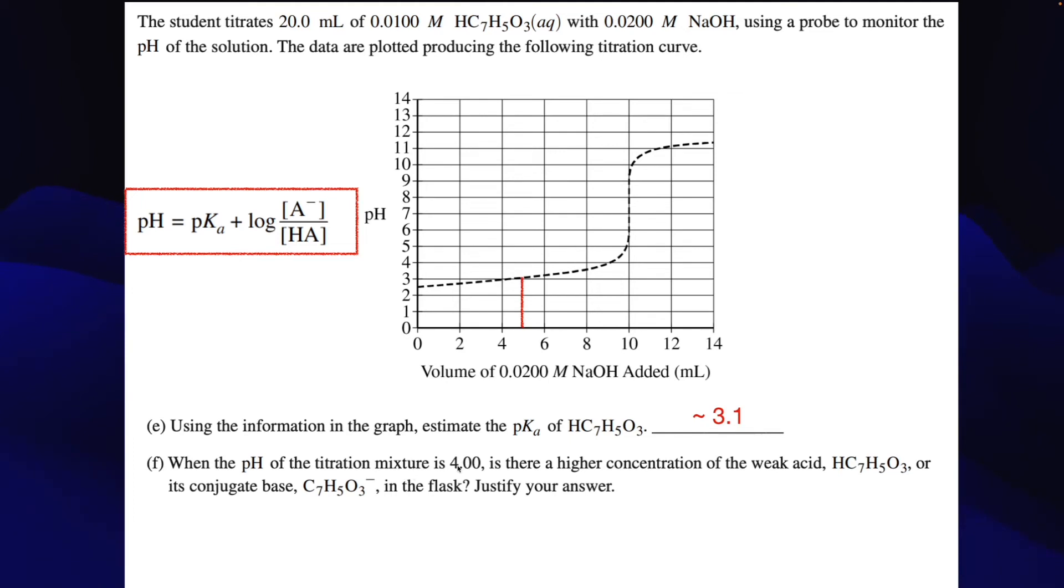Now, when the pH of the titration mixture is 4, so at the pH of 4, is there a higher concentration of the weak acid? Because remember, this is like the buffer region here. Or its conjugate base in the flask, justify your answer. Okay, so I want to find where we are when we're at 4. So if I take this line over, it's going to be right here. So it's going to be past 8 on my milliliters here. And noticing that this is our halfway point, if we want to actually just kind of remember a little fact about titration curves and buffer solutions here, on this side of the line, this is where the acid form predominates because this is going to be the bigger number. On this side, this top part of our fraction, the numerator, is going to be bigger.